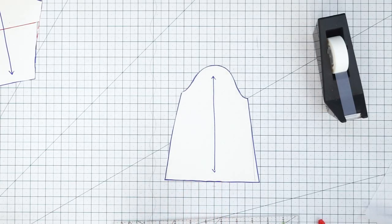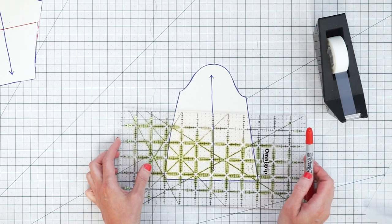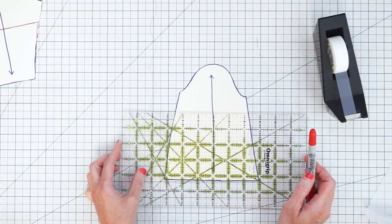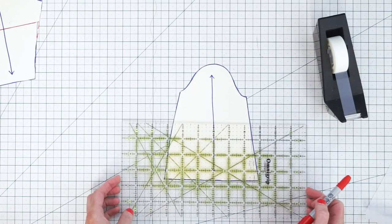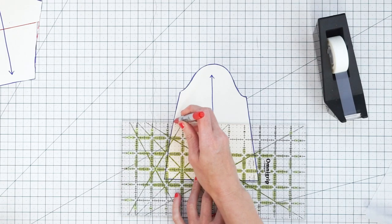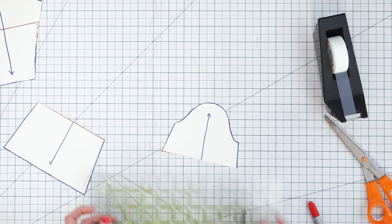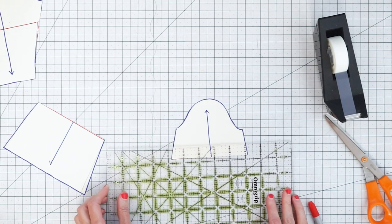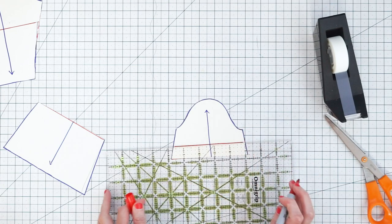Now for our bell-shaped sleeve we're just going to do the same thing and draw my grain line. I did not draw very straight but we're going to draw a straight lengthen shorten line that is perpendicular to our grain line. And then cut along that line and then you can take your ruler and just draw how much you want to shorten it.